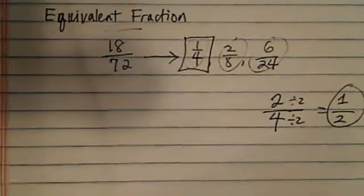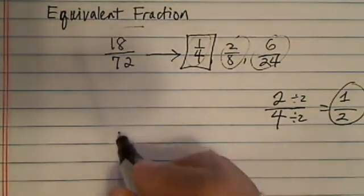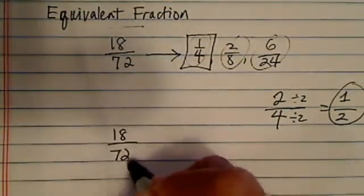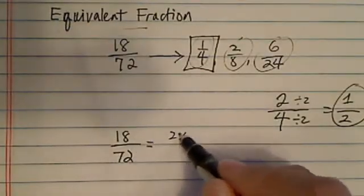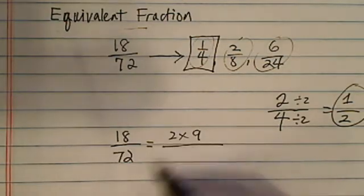As the fraction gets a little more complicated, what we want to do is write out all the factors in the fraction. So let's try it. 18 is 2 times 9. 72.